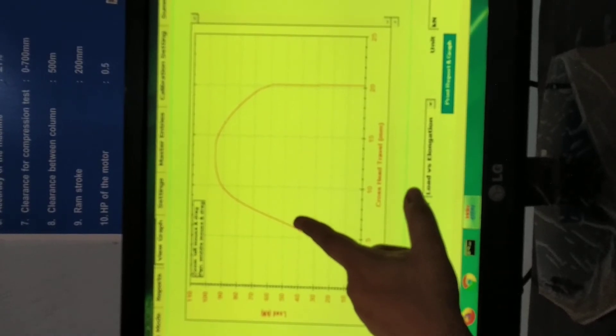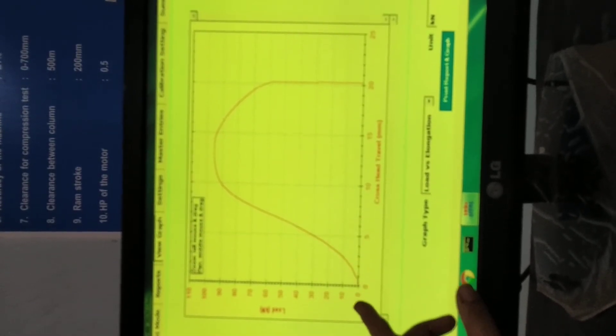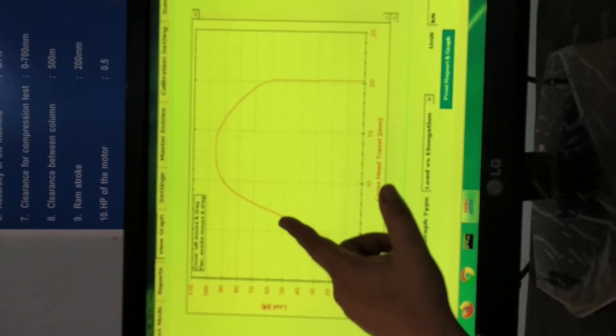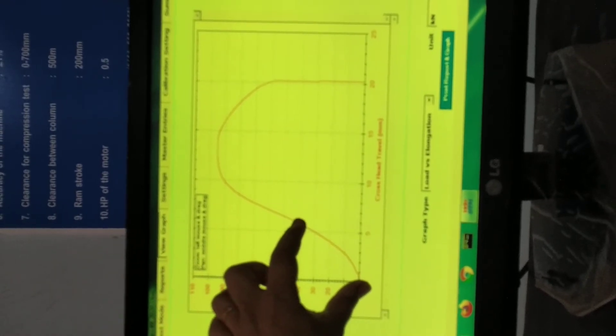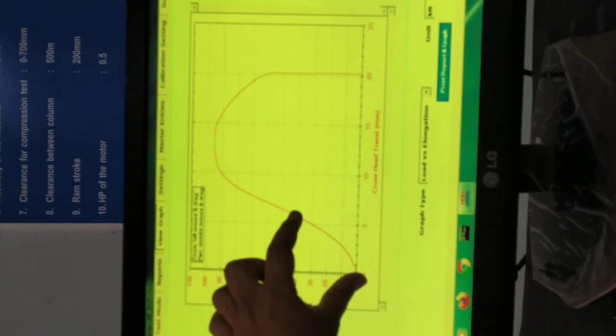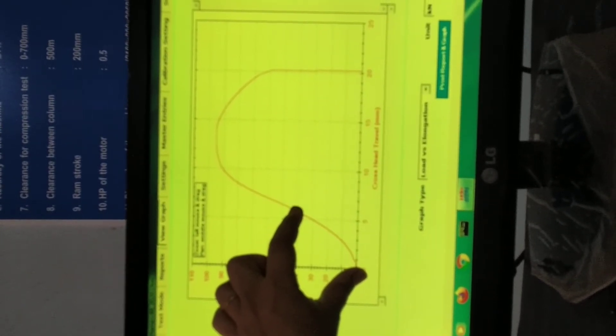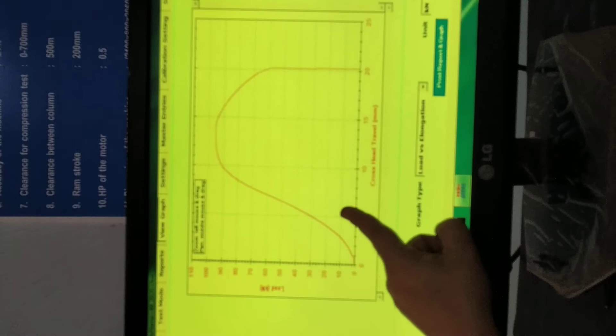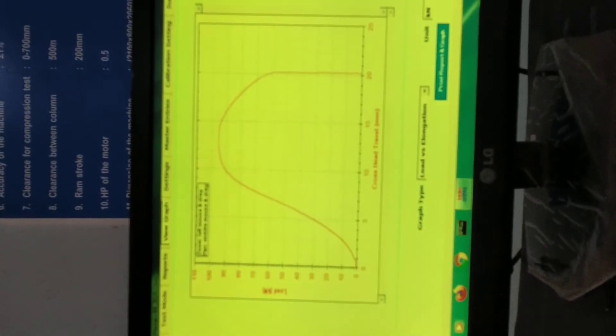At this point, we see the elastic limit. This is the elastic region. In this elastic region, we will be able to calculate the Young's modulus. That is, we will be able to calculate the ratio of stress by strain. By the slope, we will be able to find this out.